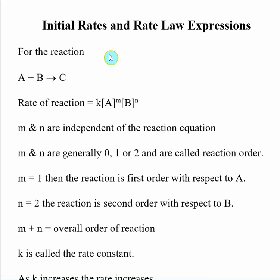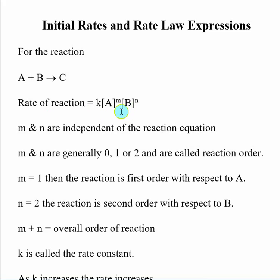So if I want to come up with a basic rate law expression for a given reaction — here we have A plus B going to make C — I write down that the rate of reaction is equal to some constant K times the concentration of my reactants. This builds off the idea that rates of reaction are directly related to the concentration of reactants. But here we have these exponents M and N, which says that we really don't know how these reactants affect rate, or if they even affect it at all. So there's this mystery factor here.